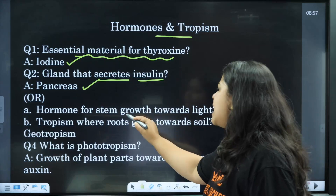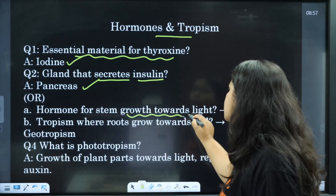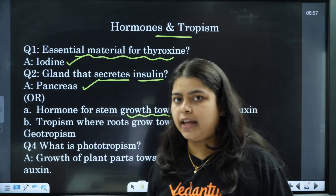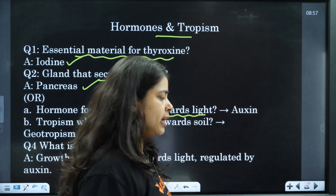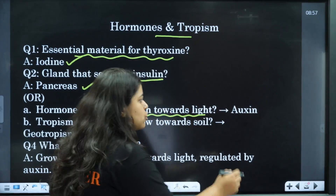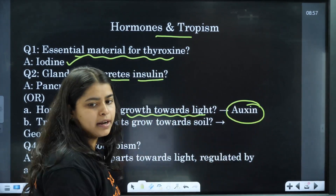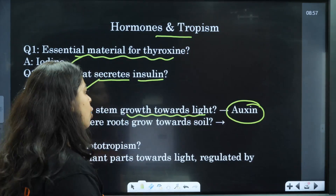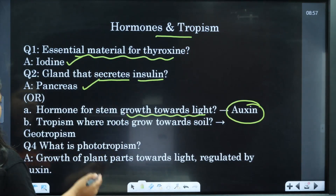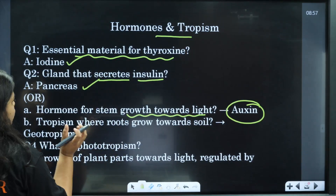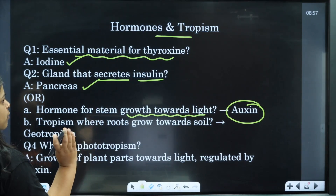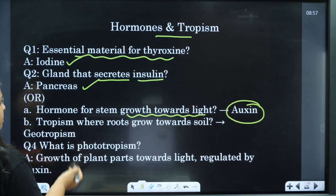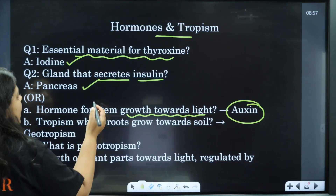The hormone responsible for stem growth towards light is auxin. Growth towards light — that is called auxin. This is a one-mark, one-word question. These types of questions have been repeated a lot of times in question papers.